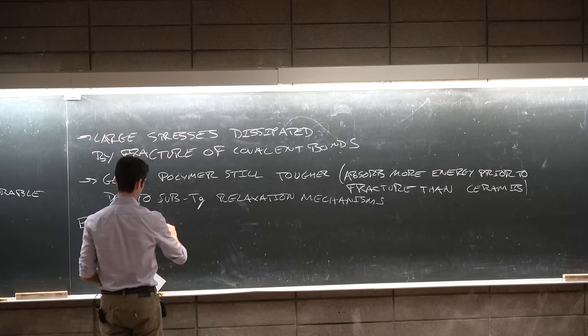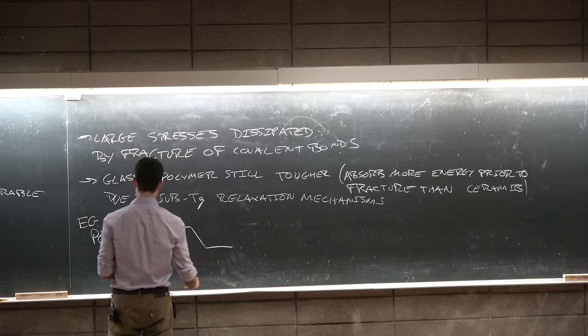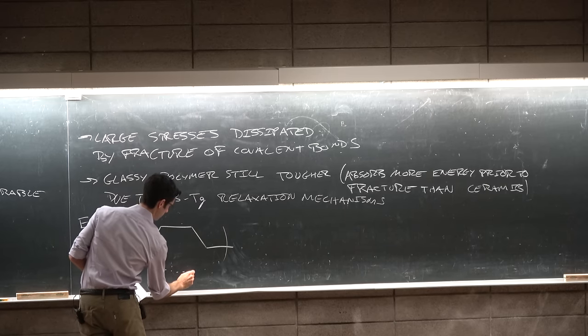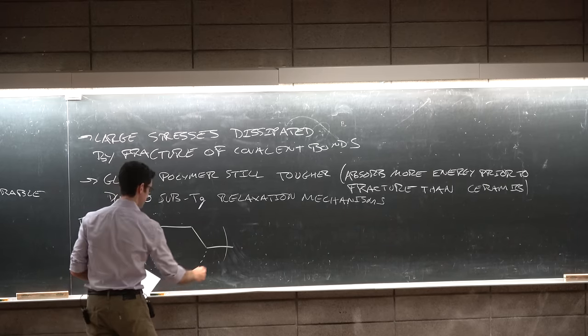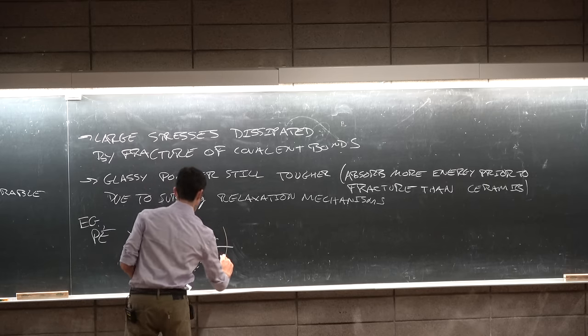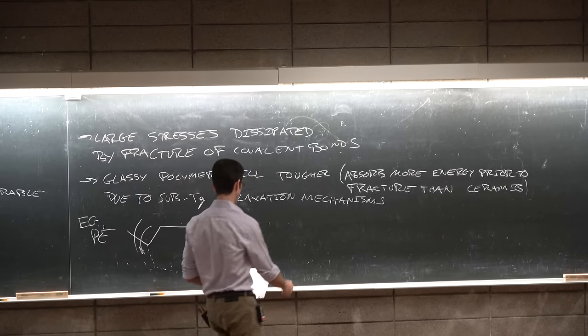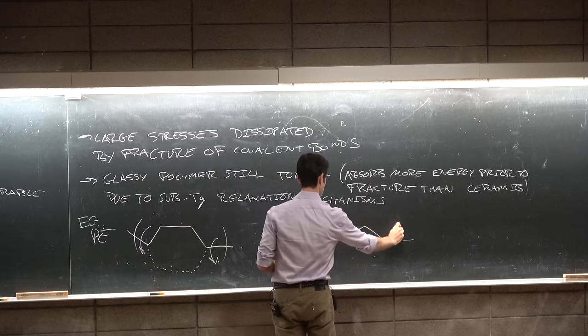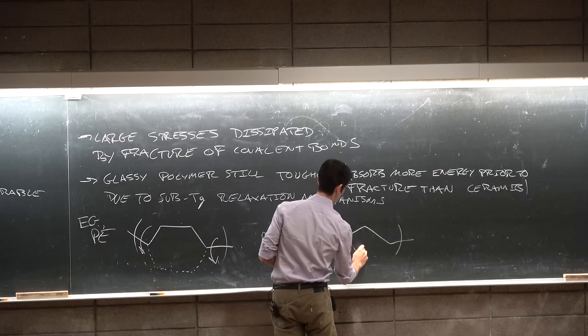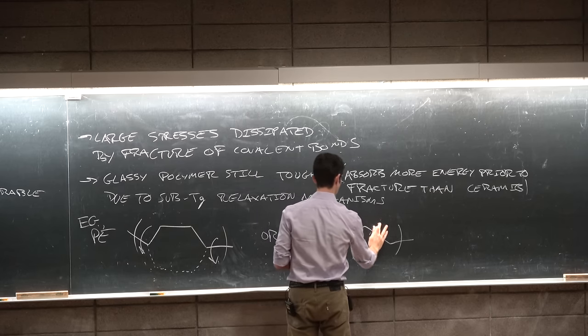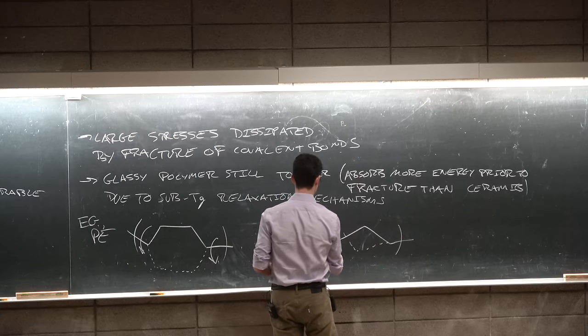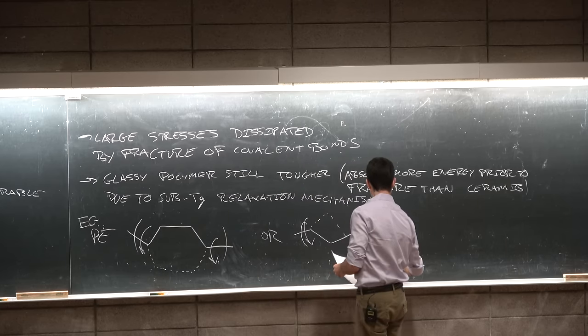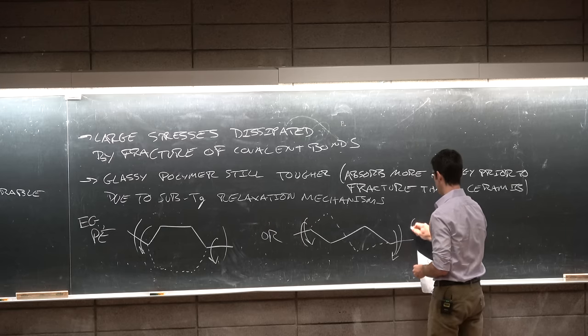as in polyethylene, you can have motions like this, where these bonds can rotate or in a trans-geometry. They can rotate like this. And this is called a crankshaft mechanism.